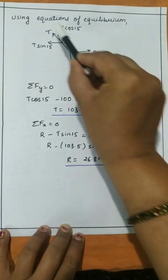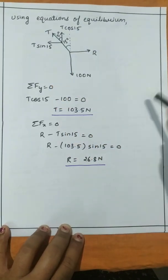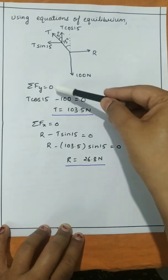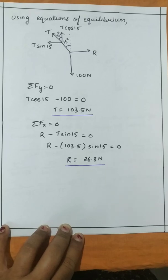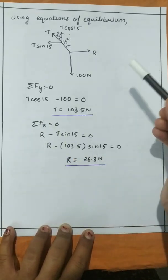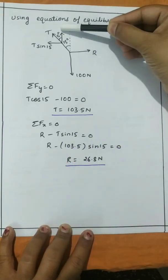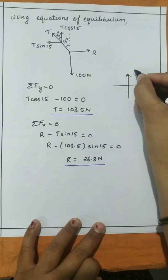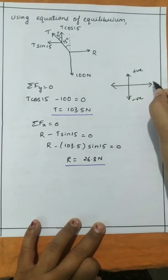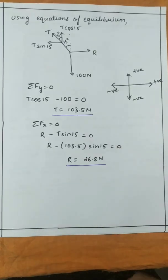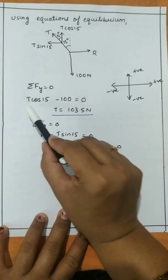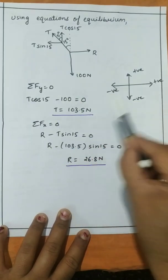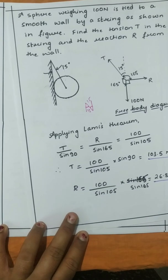Taking summation of vertical forces equal to zero: equations of equilibrium state that sigma Fy = 0, sigma Fx = 0. There are two vertical forces — the vertical component of T and the self-weight of 100 N. Using sign convention: upwards positive, downwards negative. So T cos 15 (upward, positive) minus 100 equals 0, giving us T equal to 103.5 N — the same result as from Lamy's theorem.